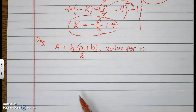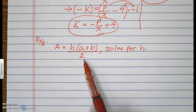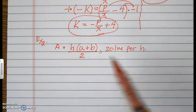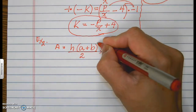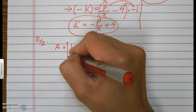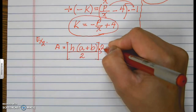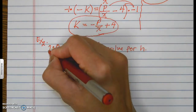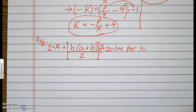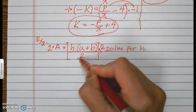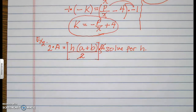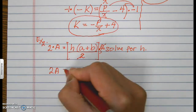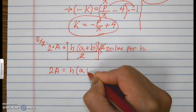The first thing to remove is the 2. The inverse of divide is multiply, so I'll multiply the right side by 2. Whatever I do on the right, I do on the left — I'll multiply this side by 2 as well. The 2 at the bottom and 2 on top become 1, giving 2A equals h times parentheses a plus b.